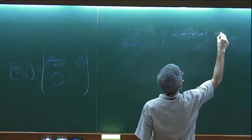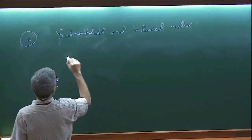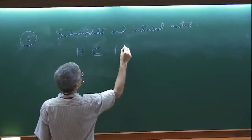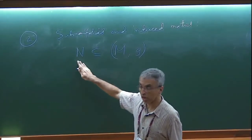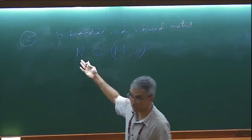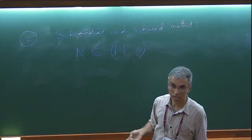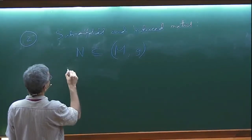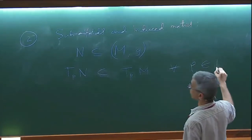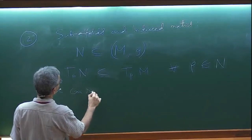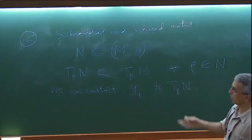The second example is submanifolds. If N is a submanifold of a Riemannian manifold, then one has a natural Riemannian metric on N. The tangent space of N sits as a subspace of the tangent space of the ambient manifold at the corresponding point, so you just restrict the inner product. This is called the induced metric on N.